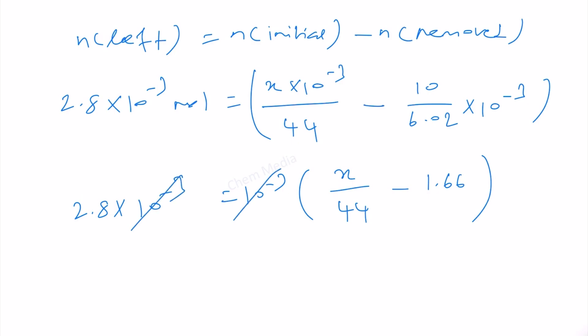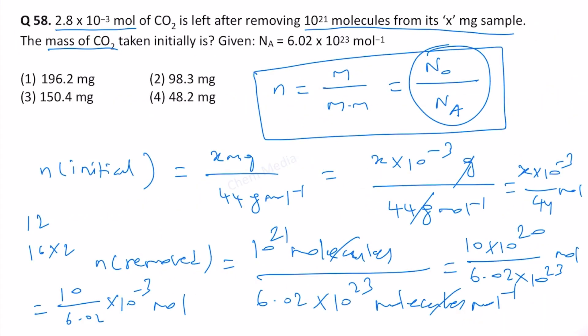If we bring the minus 1.66 on the other side, it becomes plus. 2.8 plus 1.66 will be 4.46 times 44 equal to x. 40 times 4 is 160. If we take 0.46 as 0.5 then it will be 22. This will be approximately 196 milligrams. The answer should be approximately that. Therefore, option one is correct.